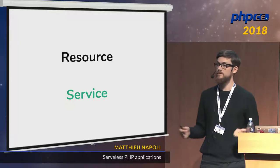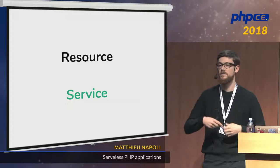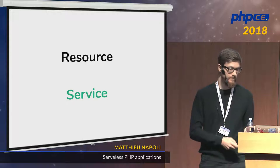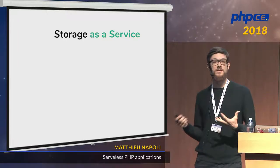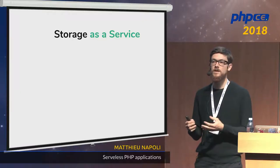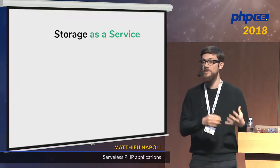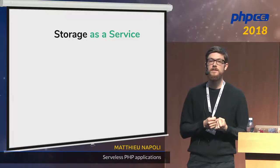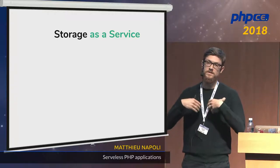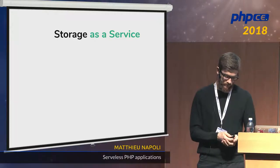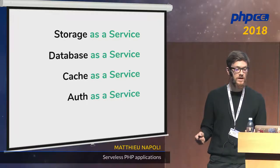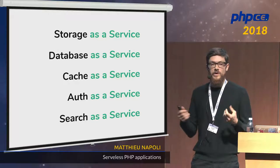With a service, the job gets done and we don't really care how — the job just gets done. Let's see a few examples. We have storage as a service: Amazon S3 is a very good example of a serverless equivalent to renting a disk and storing files. With Amazon S3, you just pay and send the files to the API and that's it. You have database as a service, caching as a service, authentication as a service, search as a service — we have so many services, it's like the era of services.